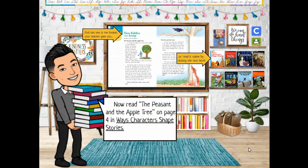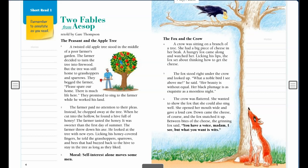Okay, now we're going to read The Pheasant and the Apple Tree on page four. So you see the booklet where it says Ways Characters Shape Stories, open up page four please. Now we're on page four, we're going to read The Pheasant and the Apple Tree. So we're just reading in this section right here. Follow along. Remember to add as you read. Two Fables from Aesop, retold by Gare Thompson.